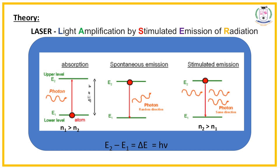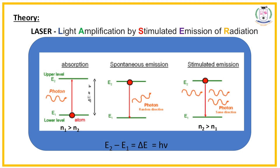In the first process, absorption: the electrons are in ground state, that is N1. Here N1 represents the number of electrons in ground state, and N2 represents the number of electrons in the higher energy level or excited state. The condition is N1 is greater than N2. When the electron in ground state absorbs energy from the incident photon, E = hν₁, it excites to the higher energy level. The absorbed energy E = hν₁ should be greater than or equal to the energy difference between energy levels E2 and E1.